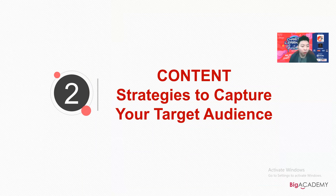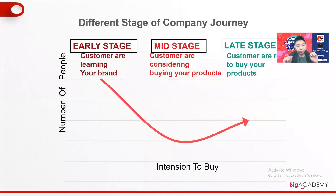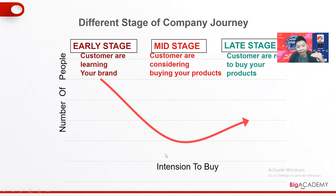Content is very important because in digital marketing, you need to plan your content first — a series of content to help you reach your customers. When moving your company into digital marketing, you need to separate three stages for your customer base. On the left of the graph is the number of people, and on the bottom is the intention to buy. This graph shows your conversion rate when doing digital marketing, whether on Facebook, Google, Instagram, and so on.